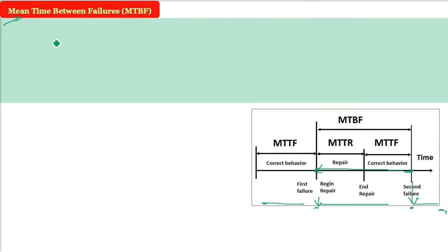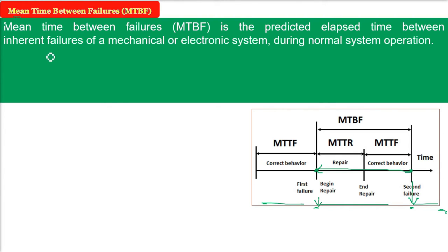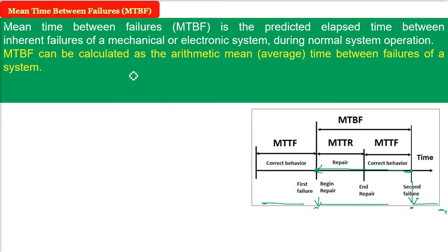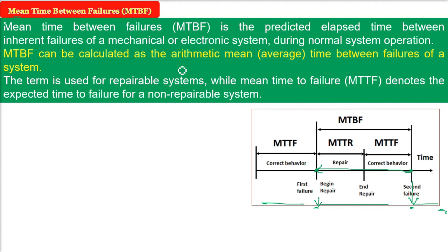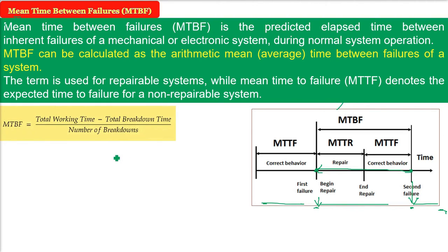MTBF is the predicted elapsed time between inherent failures of a mechanical, electronic, computer system, or software product during normal operation. It is calculated as the arithmetic mean — the average — of the time between failures. The term is used for repairable systems, while MTTF denotes the expected time to failure for a non-repairable system. MTBF equals total working time minus total breakdown time, divided by the number of breakdowns.